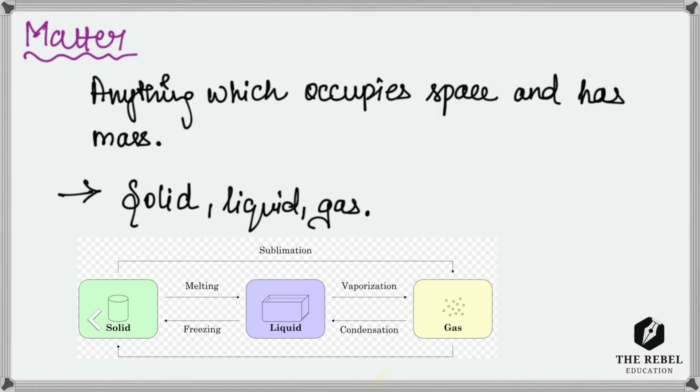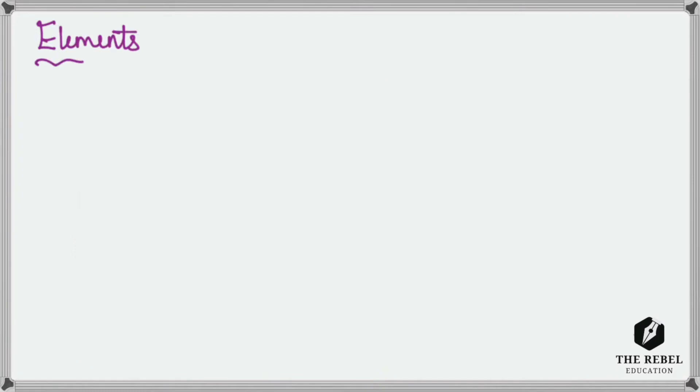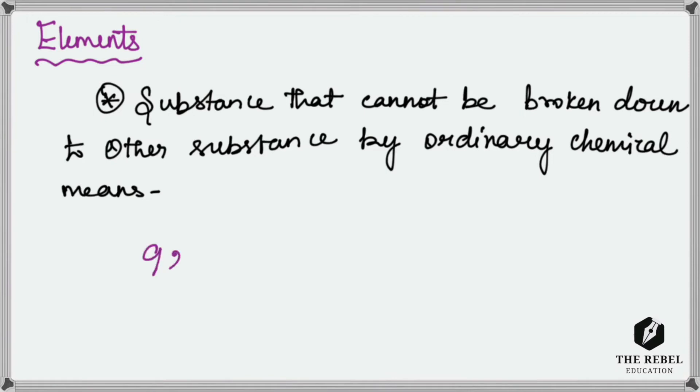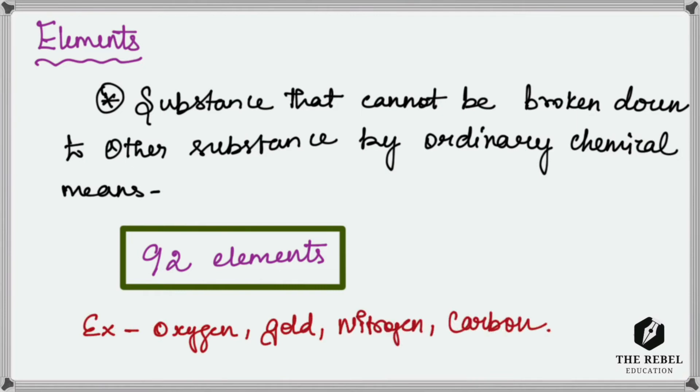All these matters are made up of chemical elements. So what are elements? That's our next question. Substances that cannot be broken down further by any chemical means are called elements. For example, there are totally 92 naturally occurring elements discovered by scientists so far. Some examples are oxygen, gold, nitrogen, and carbon.